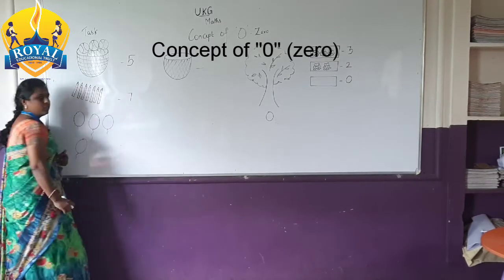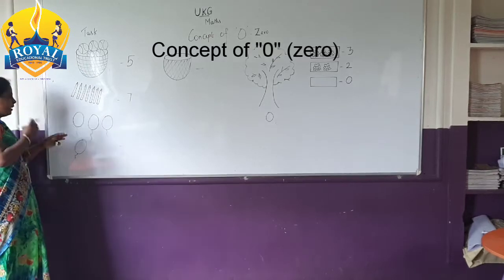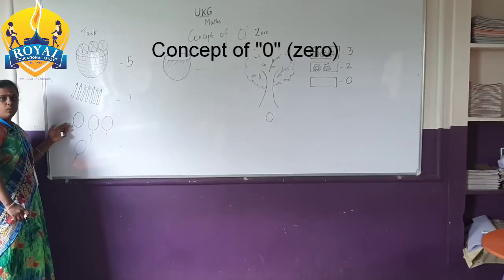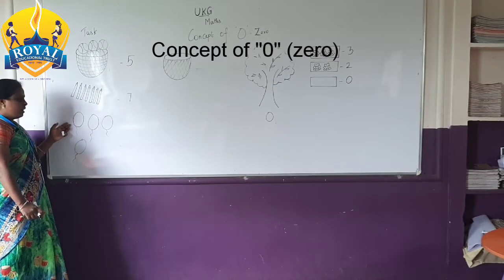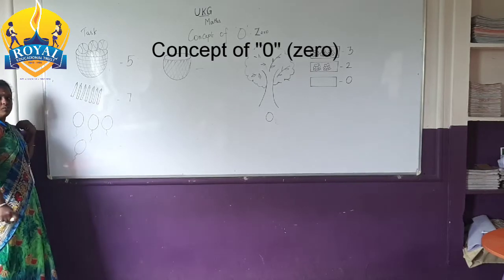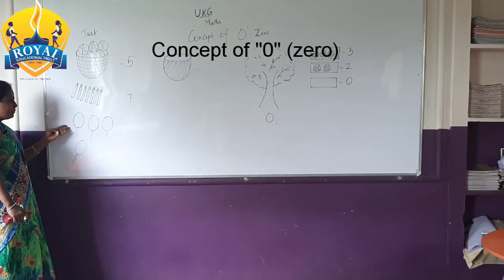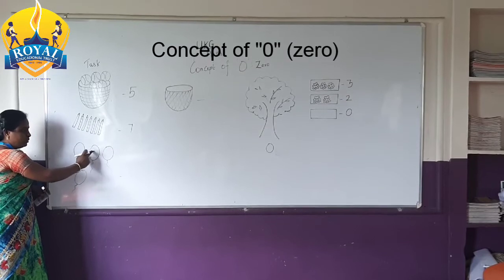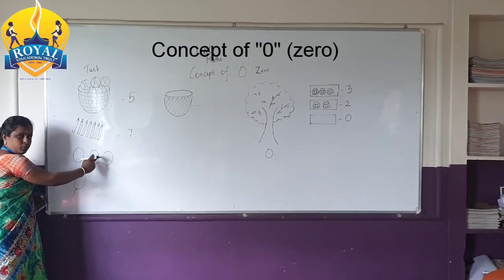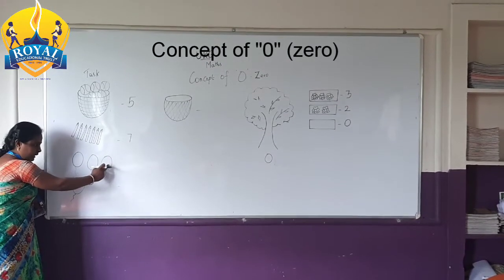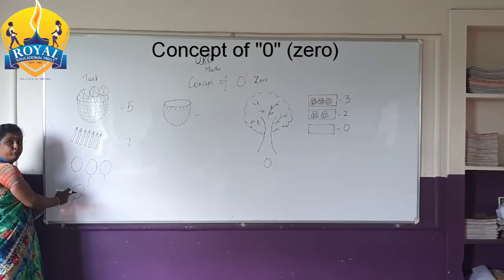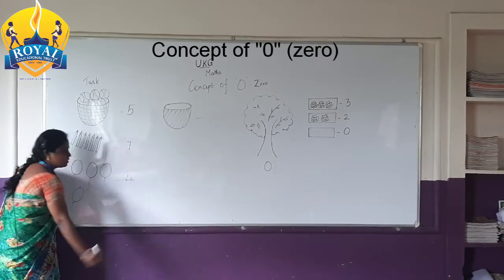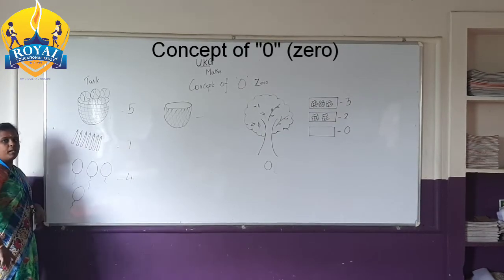Very good. What is this? These are balloons. How many balloons? 1, 2, 3, 4 balloons. How many balloons? 4 balloons.